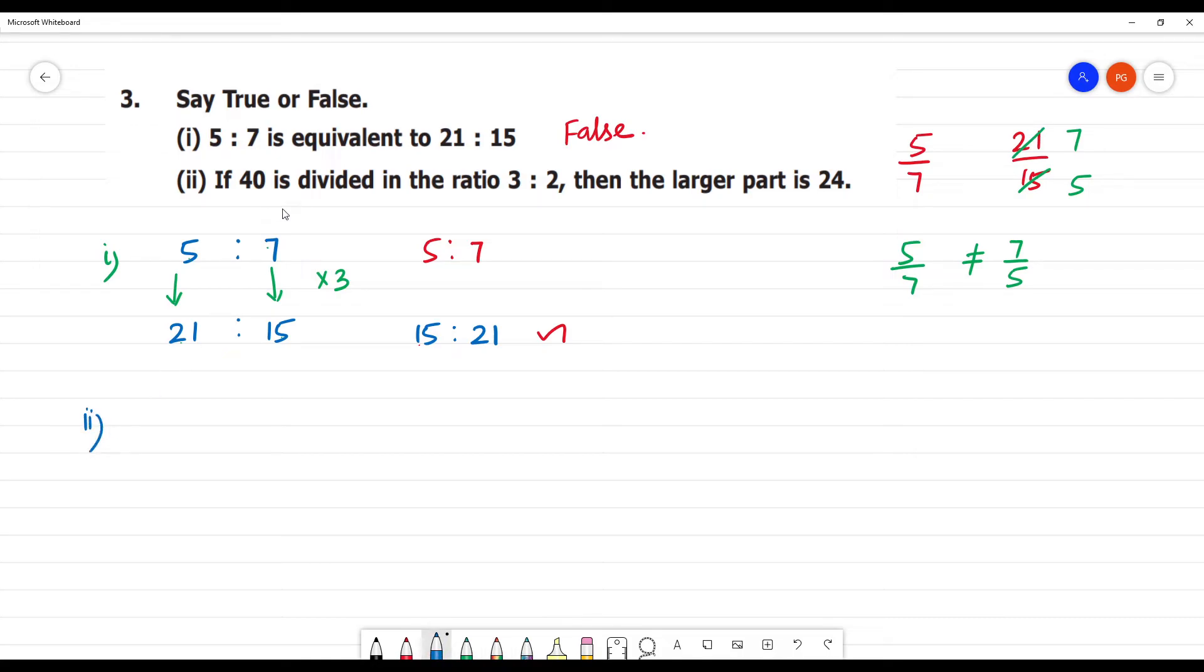Next is second one. If 40 is divided in the ratio 3 is to 2, then the larger part is 24. First we have to say, 3 is to 2, total equal parts. 3 is to 2. Now 3 plus 2, that is equal to 5 equal parts.